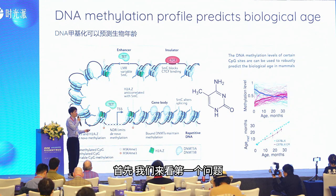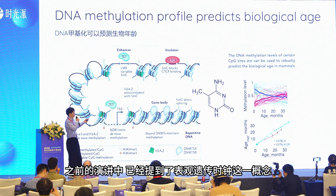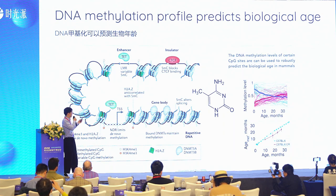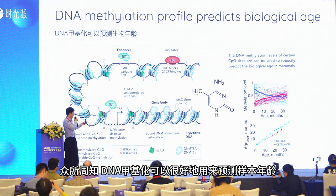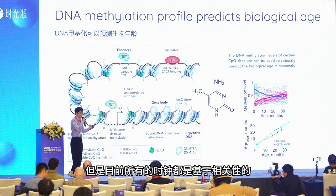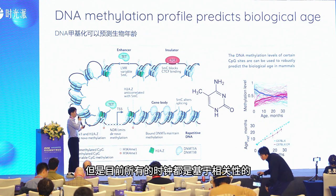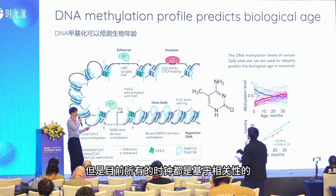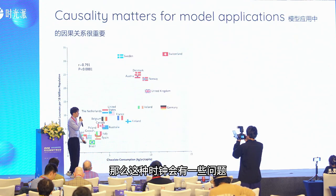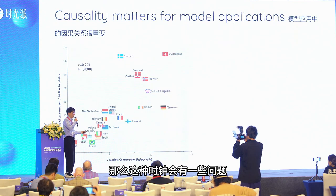Throughout my PhD I'm really trying to tackle all three problems. Let's look at the first one. From previous talks you probably already heard about the epigenetic clock — DNA methylation can be used to predict the age of a sample. But all current clocks are correlation-based, and correlation-based clocks can have problems.